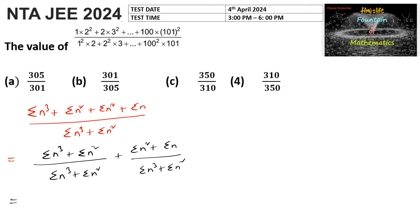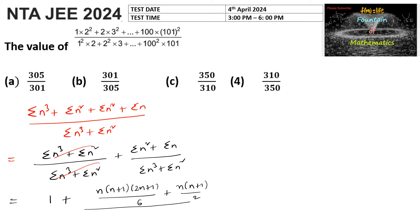Substituting the values, we can cancel common factors. This gives 1 plus: summation n² is n·(n+1)·(2n+1)/6 and summation n is n·(n+1)/2, divided by summation n³ which is n²·(n+1)²/4 plus summation n² which is n·(n+1)·(2n+1)/6.